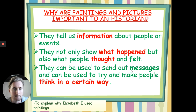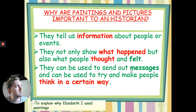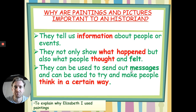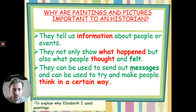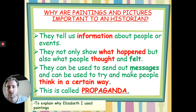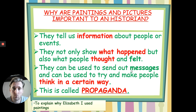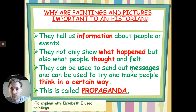And they can be used to send out messages and can be used to try and make people think in a certain way. There's a particular word that we use today that tries to influence people to think in a certain way. Have a think what you think that word means and write it down. The word I'm thinking of — to make people think in a certain way and to influence people — is propaganda. And this was really important when looking at paintings and pictures historically through time, because paintings are often used to influence people, to make people look better than perhaps they were.